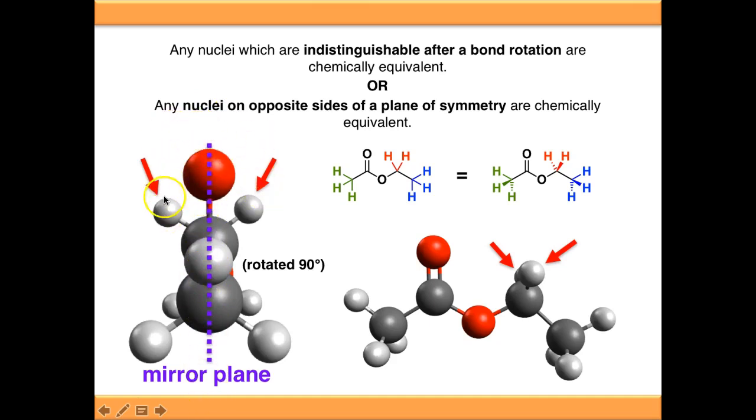There is a mirror plane right down the backbone of that molecule, and these two hydrogens are on opposite sides of that mirror plane. Because the molecule is symmetric in the plane of the screen, we know these are chemically equivalent and will give rise to a single signal.